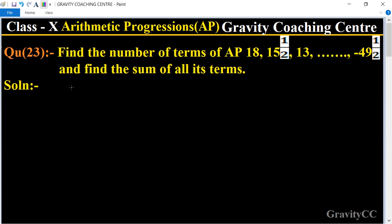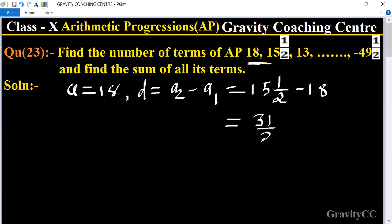In this question, the first term is given: a equals 18. And the common difference d equals, its formula is second term minus first term. The second term is 15 and 1/2 minus 18, equal to 31/2 minus 18.